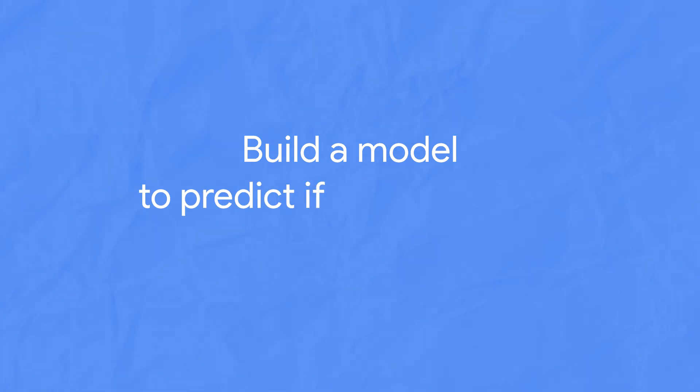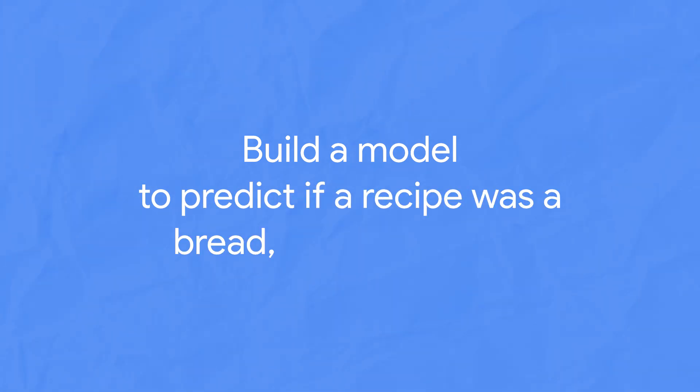I've been baking a ton over the past few months, and after following a lot of recipes I started to notice that a lot of baking recipes follow a pattern. So I started to wonder, since machine learning is all about finding patterns in data, could I build a machine learning model to predict what I'm baking given a list of ingredient amounts? So I built a model to predict whether a recipe was a bread, a cake, or a cookie.